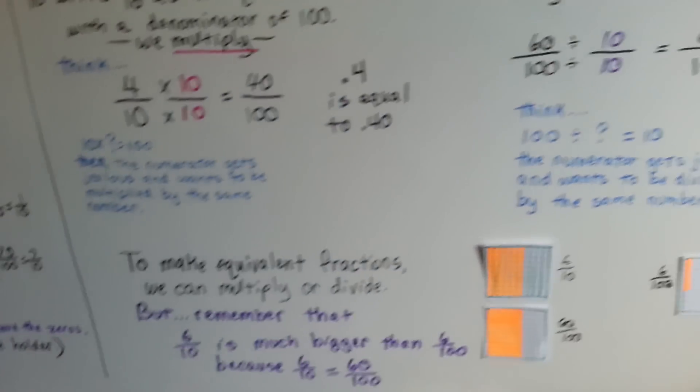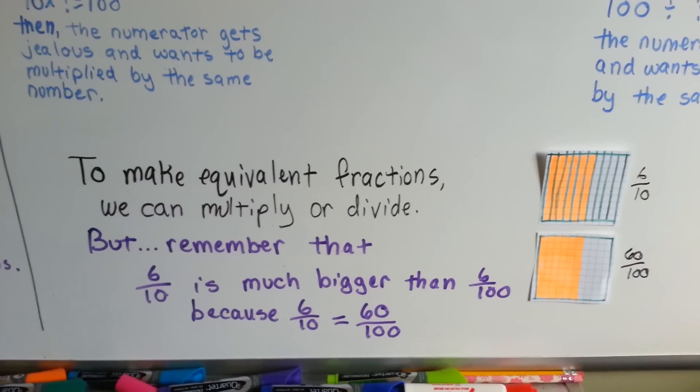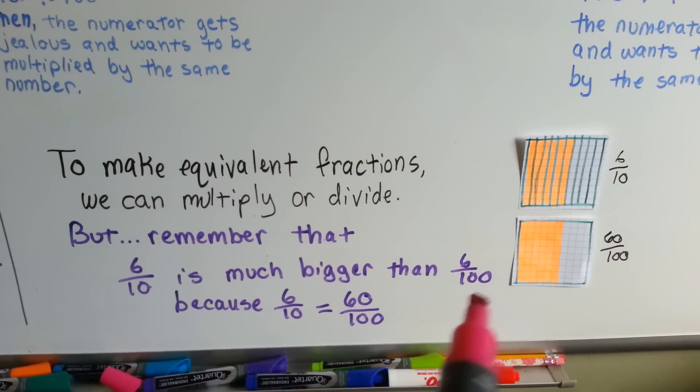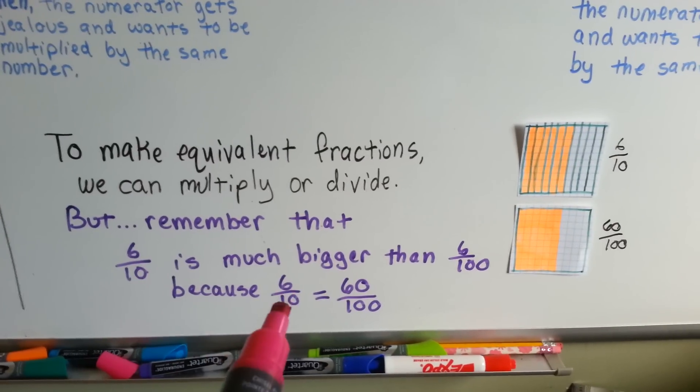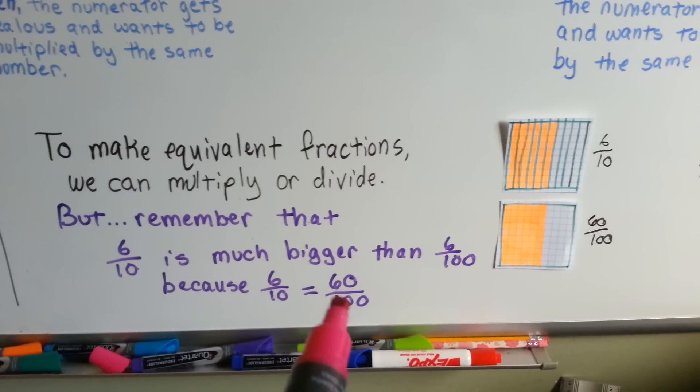So to make equivalent fractions, we can multiply or divide. But remember, six tenths is bigger than six one hundredths. Even though that has a hundred there, it's actually much smaller, because six tenths is equal to sixty one hundredths. When you add the zeros on the end.